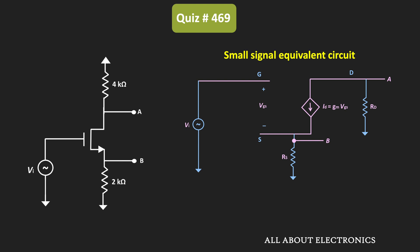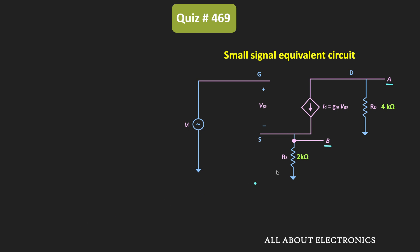This is the small signal model of the given circuit. Here, Rd is the drain resistor while Rs is the source resistor, and these two nodes are node A and node B. The drain resistor Rd is equal to 4 kilo ohm while the source resistor Rs is equal to 2 kilo ohm.